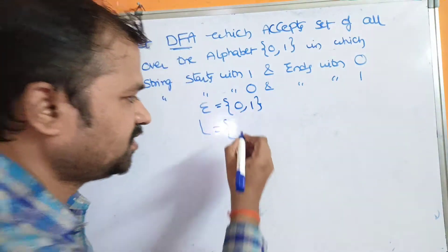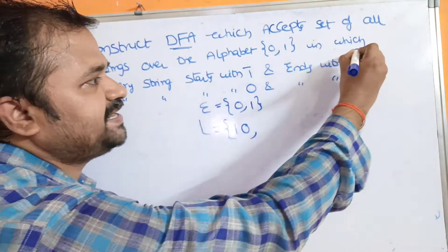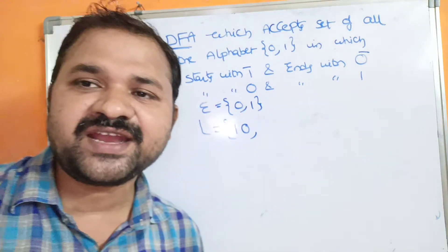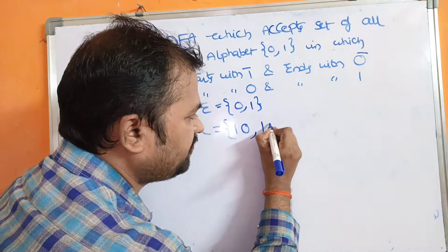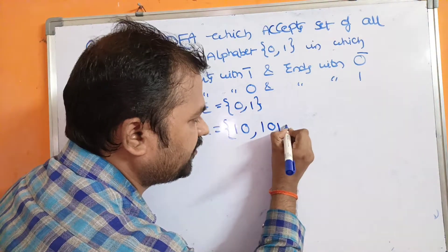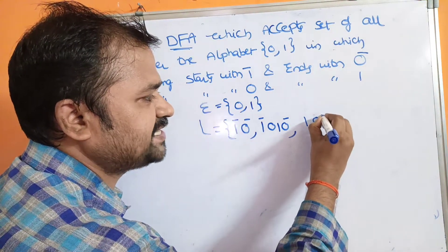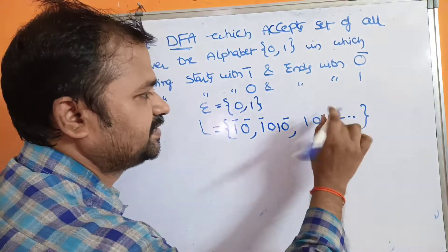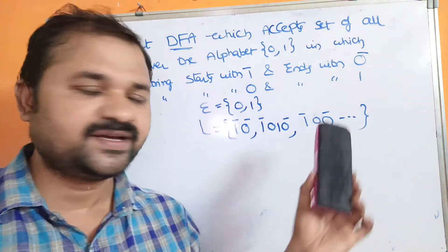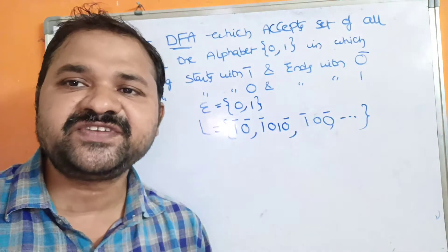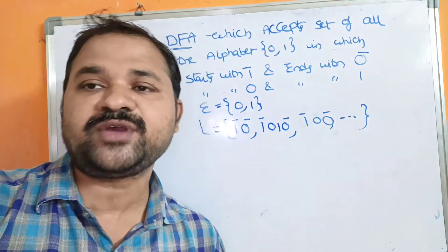The minimum possible string is '1,0' because every string starts with 1 and ends with 0. In between, we can have any number of 1s and 0s — there is no constraint on that. The minimum string is '10', which contains two characters.